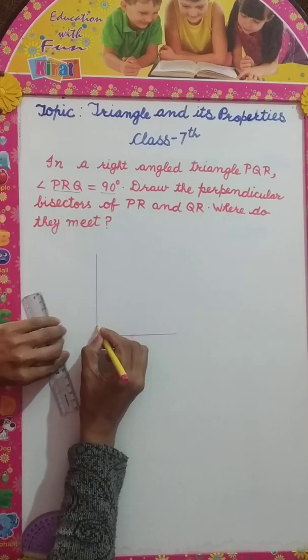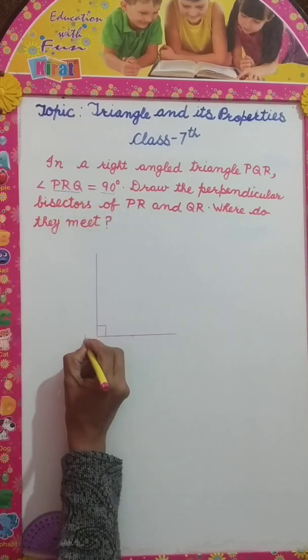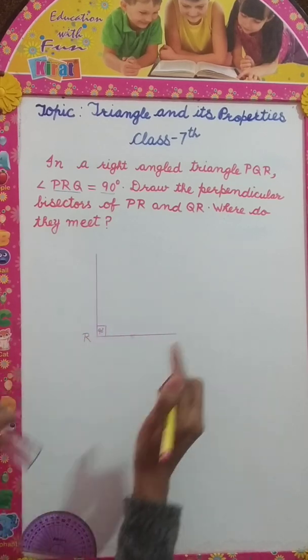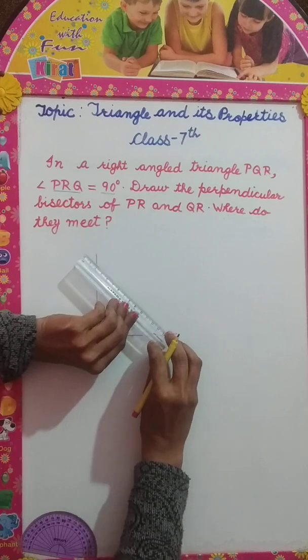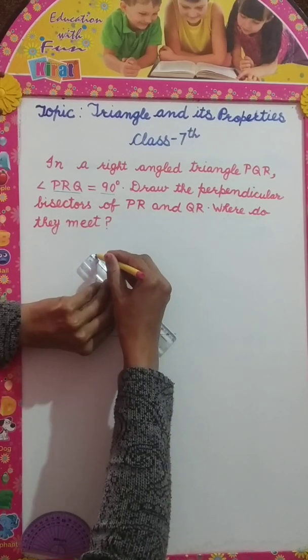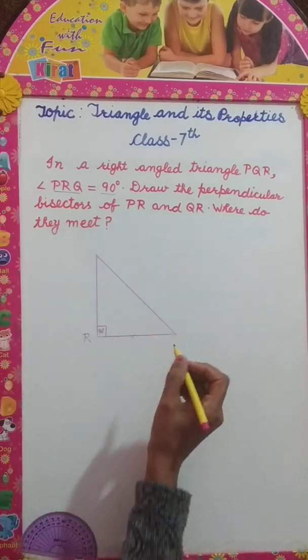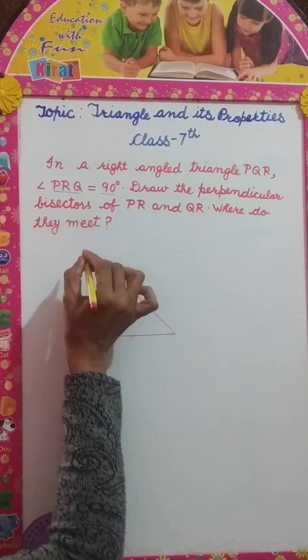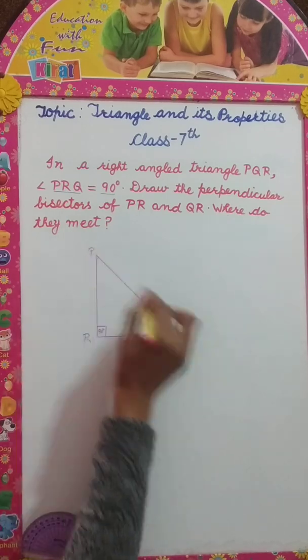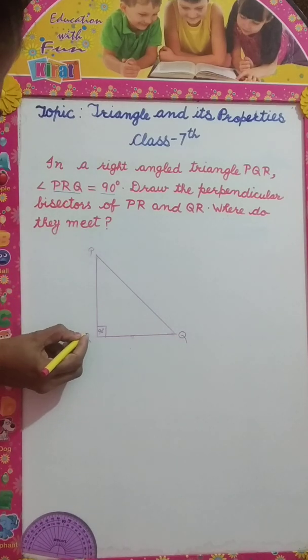This is a right angled triangle and it is given angle PRQ is 90 degree. I will take R here, this is 90 degree. Now, join these two points to form a triangle, right angled triangle. Name it P and this is Q. So, PQR is a right angled triangle.